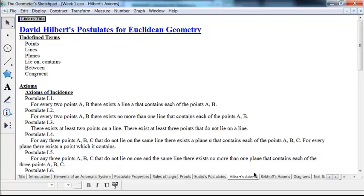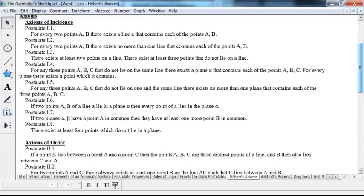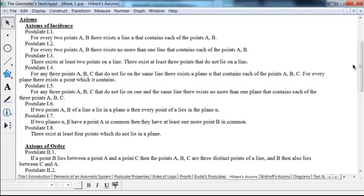And in this, Hilbert's system, points, lines, planes, lie on, contains, between, and congruent are all undefined terms. And then he sort of grouped his axioms or postulates in groups. So, we have eight postulates that are, a couple of them are existence postulates, and the others have to do with incidence, how points compare to each other.